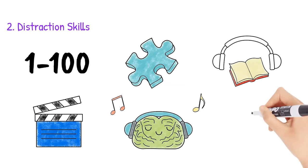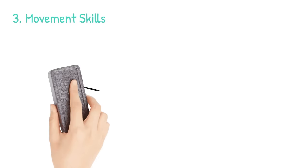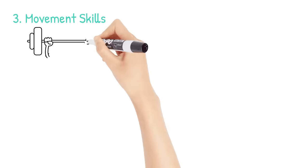Number three, movement skills. These are things you can do to move your body to physically release your anxious emotions. Examples of movement skills include exercising, cleaning or organizing your room, going for a walk, riding your bike, stretching, yoga, or martial arts.